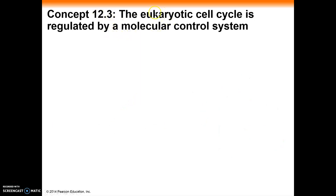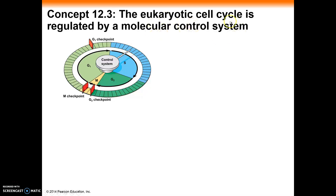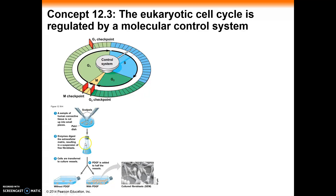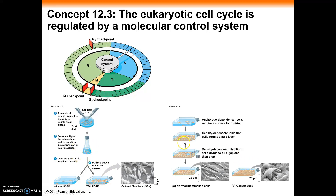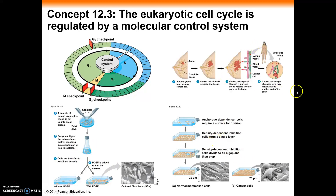To recap concept 12.3 — the eukaryotic cell cycle is regulated by a molecular control system. We know replicating DNA is a go or no-go scenario, so there's a checkpoint right before that. If we have a mistake, we can't separate the cells, so there's a checkpoint there too. There's also one final checkpoint before the cells divide. Cells require external signals to grow, density and location matter, and we discussed cancer progression.